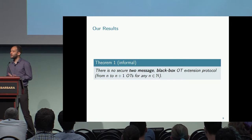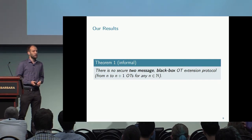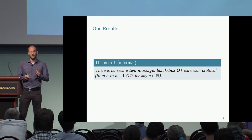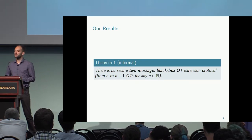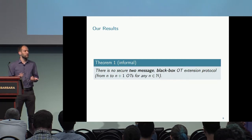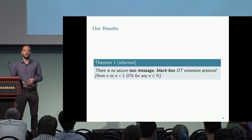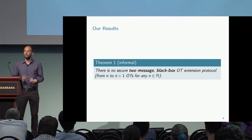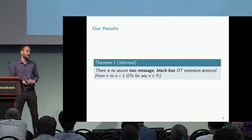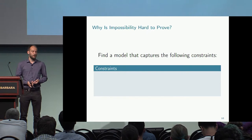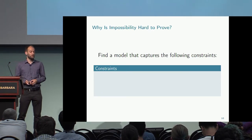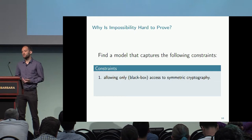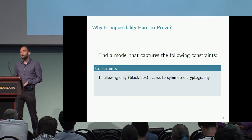This theorem might sound really surprising — how would you prove such a result? We have constraints: we only want to look at round-preserving two-message OT extensions, we want a blackbox construction, we have some base OTs to consider, and we only want to allow symmetric key operations for efficiency. Before proving this, we need a model that captures all of these constraints.